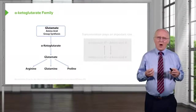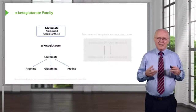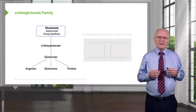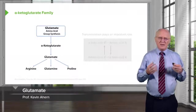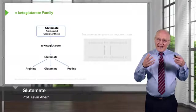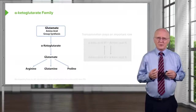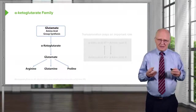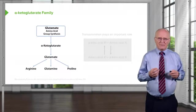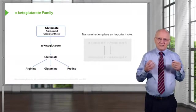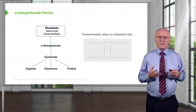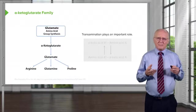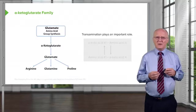I want to start a discussion about the alpha-ketoglutarate family, also called the glutamate family, because all of the amino acids made in this family include glutamate and alpha-ketoglutarate as precursors. This is a very good place to start because the alpha-ketoglutarate family begins with a process central to many amino acid metabolic processes — transamination.